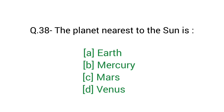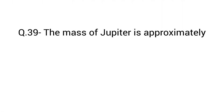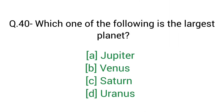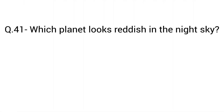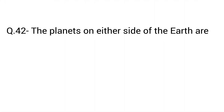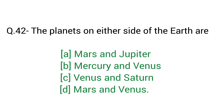Question number 38: The planet nearest to the sun is? Right answer D — Mercury. Question number 39: The mass of Jupiter is approximately 1/1000 of the solar mass. Question number 40: Which one of the following is the largest planet? Right answer D — Jupiter. Question number 41: Which planet looks reddish in the night sky? Right answer C — Mars. Question number 42: The planets on either side of the Earth are? Right answer D — Mars and Venus.